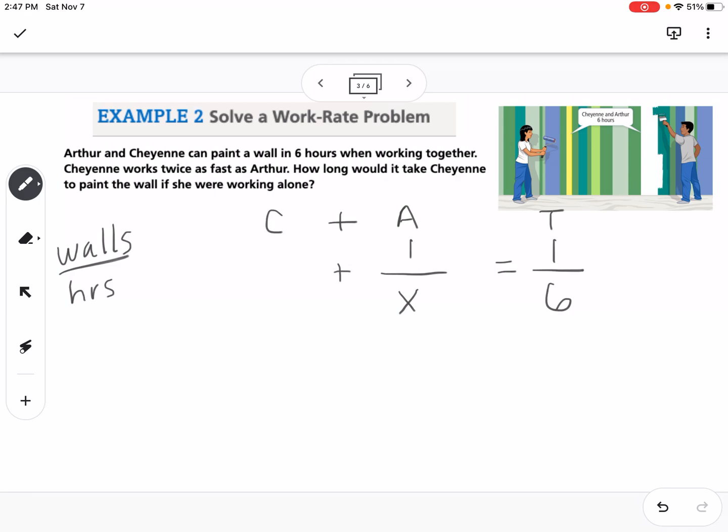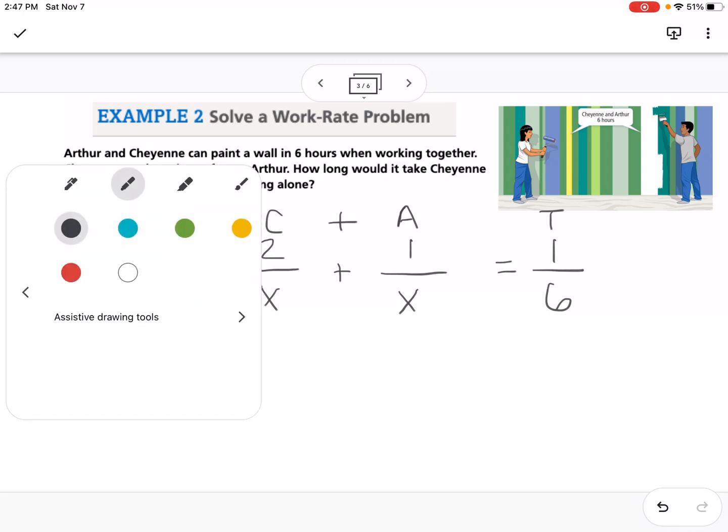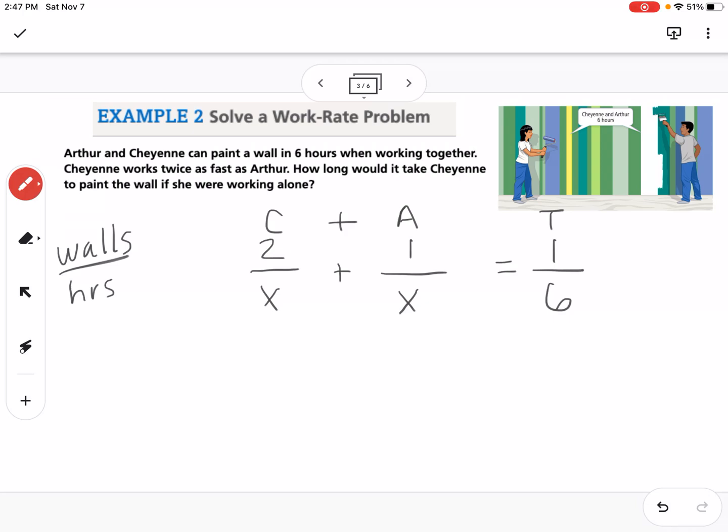We don't know how many hours, but we do know that Cheyenne, if she's working twice as fast as Arthur, she could paint two walls in x hours. So then we have this equation that needs to be solved. So we can multiply—we want to get a common denominator. Our common denominator would be 6x, so we're going to multiply this fraction top and bottom by 6, and this one top and bottom by 6, and this one by x. With equations like this, so in the previous lesson, we were just simplifying expressions, but if you have an equal sign and you get the denominator the same, you can cross it off. So now I have 12 plus 6 equals x, or 18 equals x.